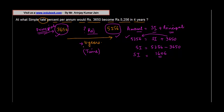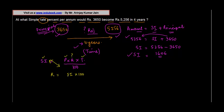Now we know the principal, the time, and the simple interest. The formula for simple interest is: SI = (Principal × Rate × Time) / 100. We know SI, Principal, and Time, so the only thing we need to find is the rate. Rearranging, Rate = (SI × 100) / (Principal × Time).